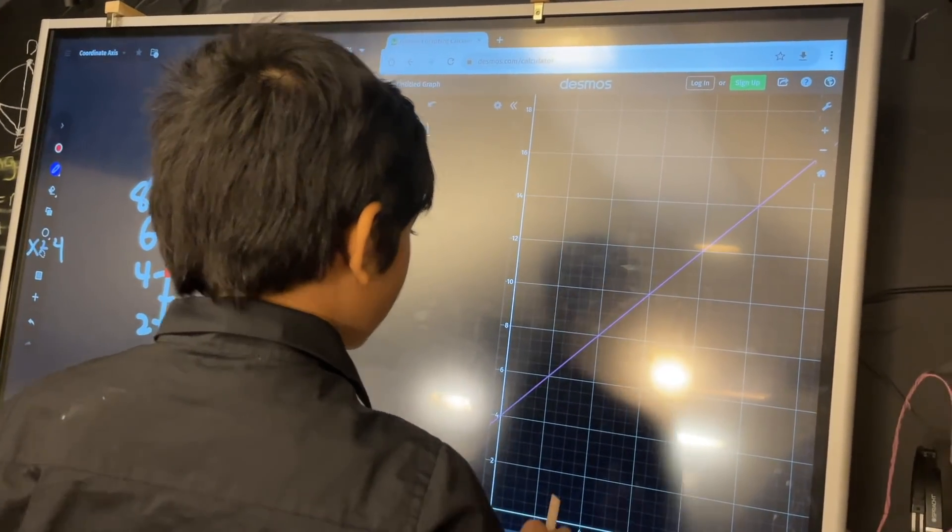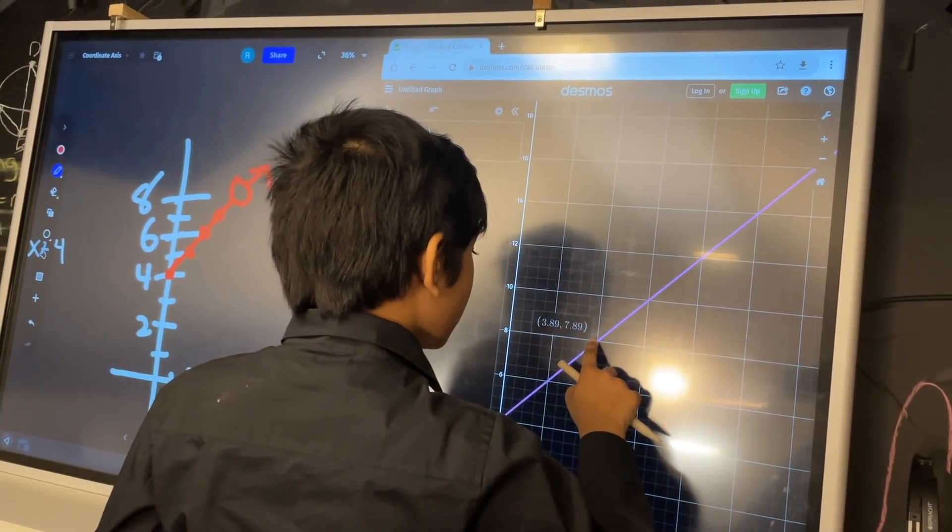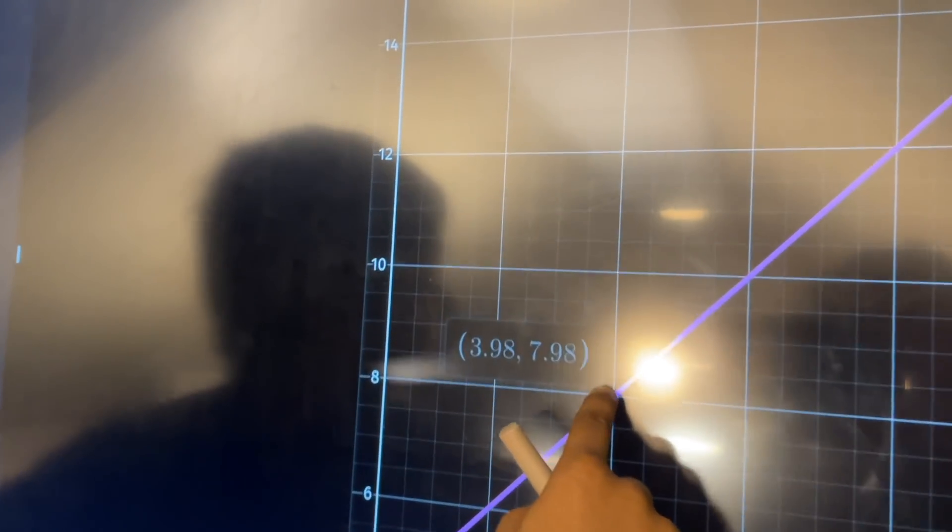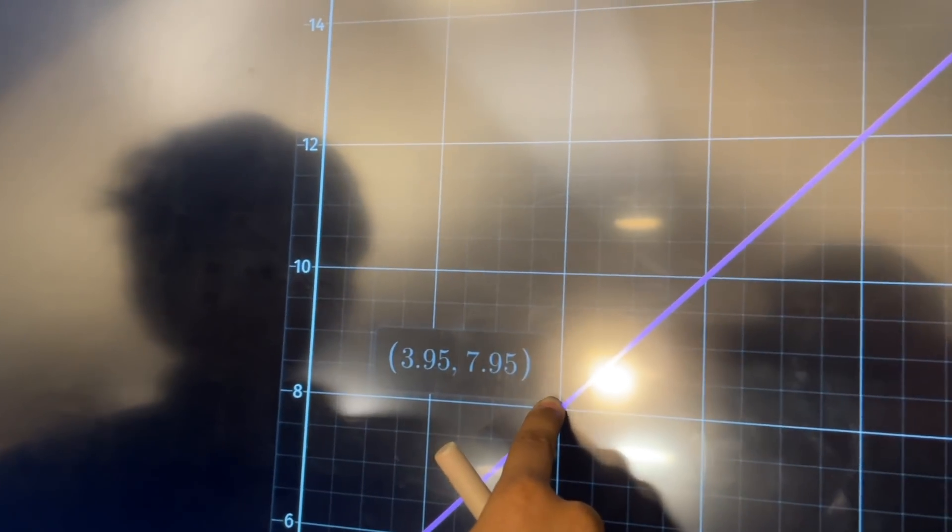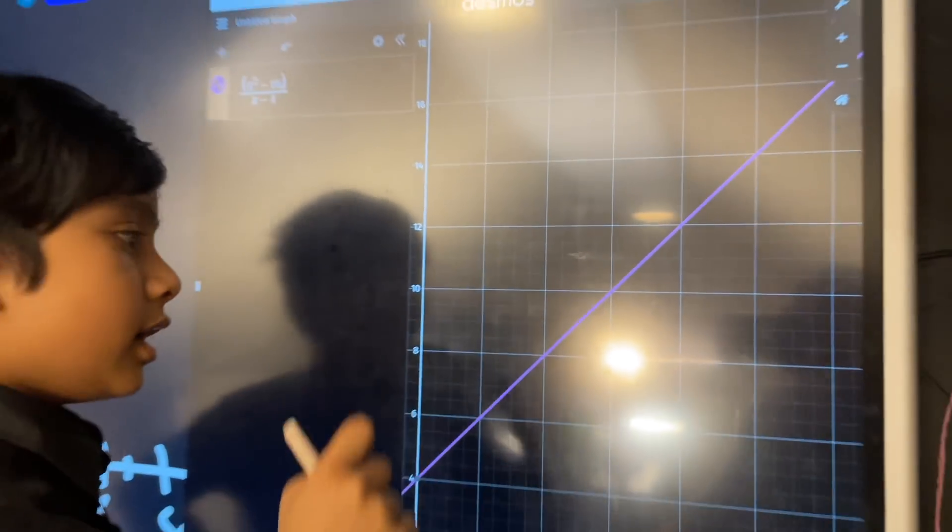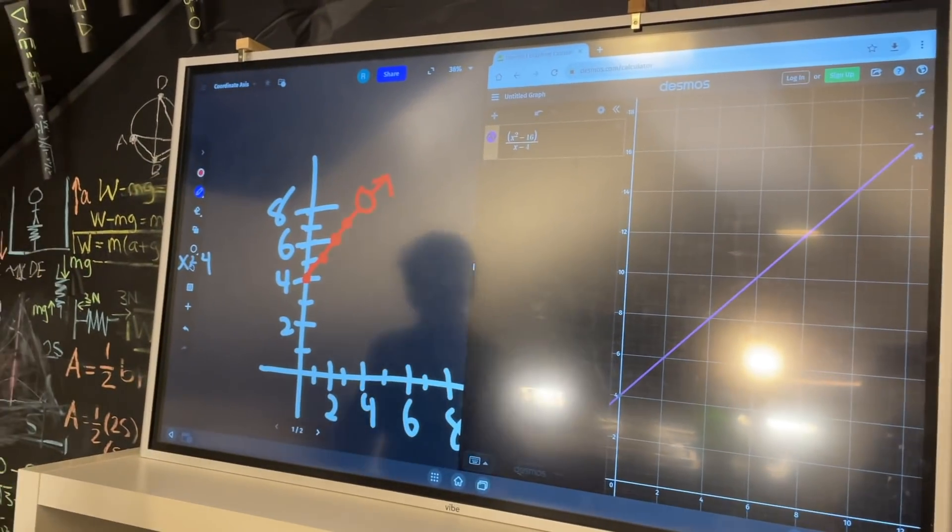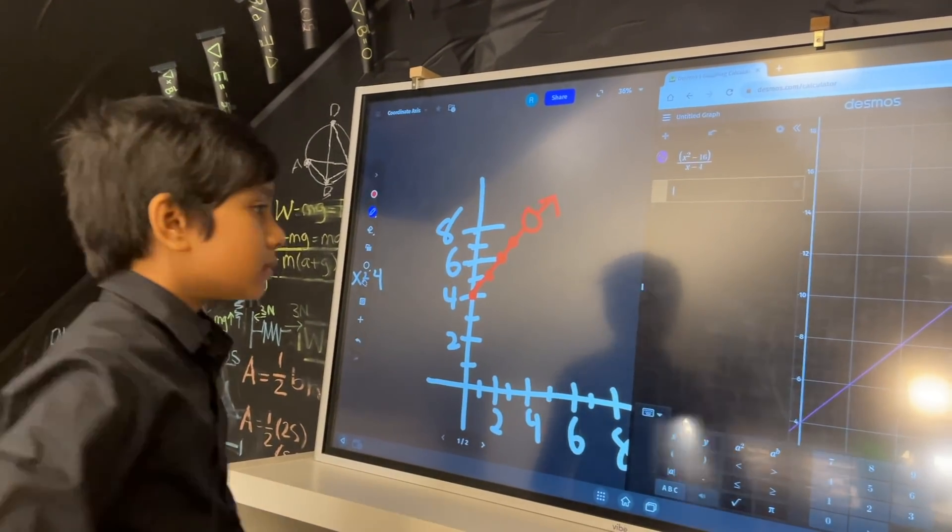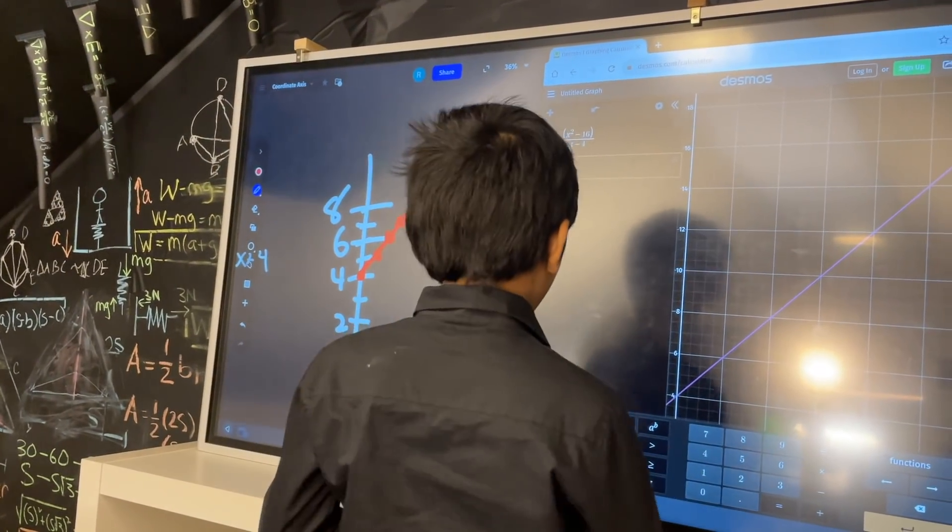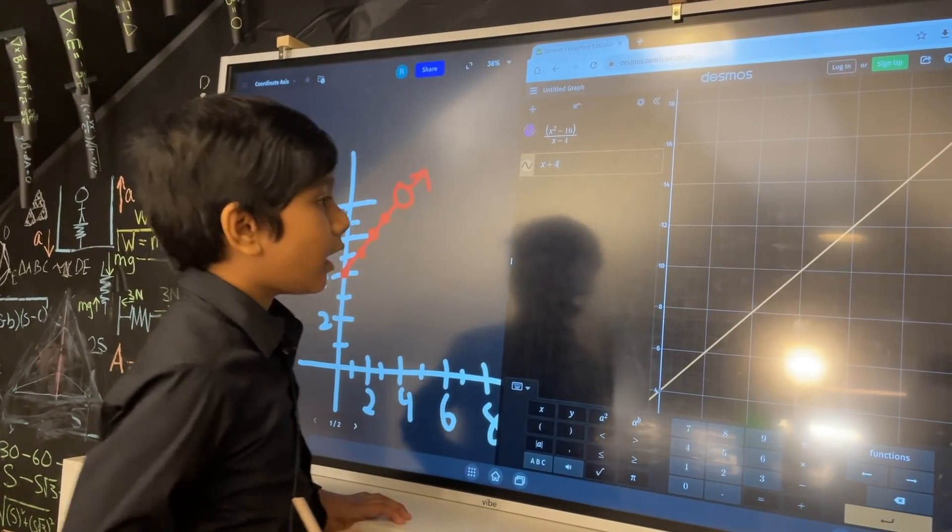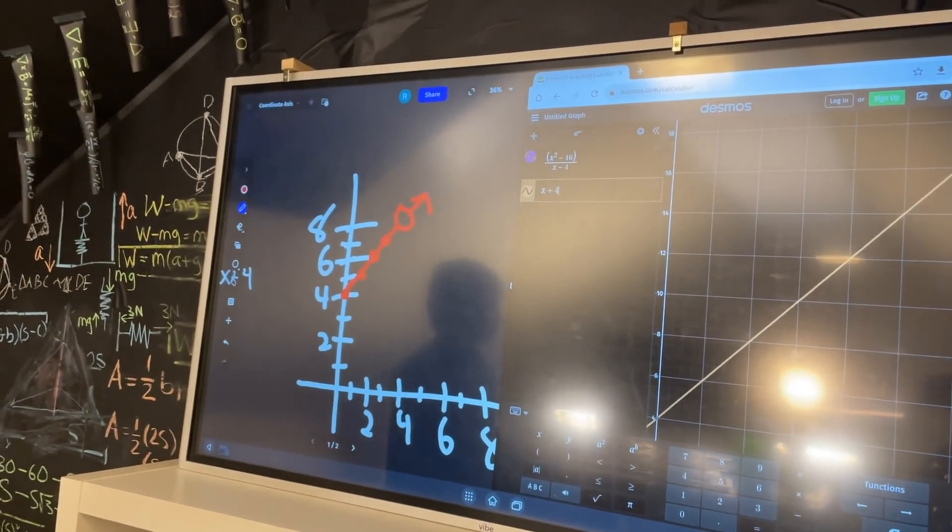But then when you get the x coordinate of 4: undefined. See? 3.95 is 7.95, and it goes there: undefined. And you can clearly see this is the same as x plus 4 as well, because if we graph that it covers the exact same trajectory.